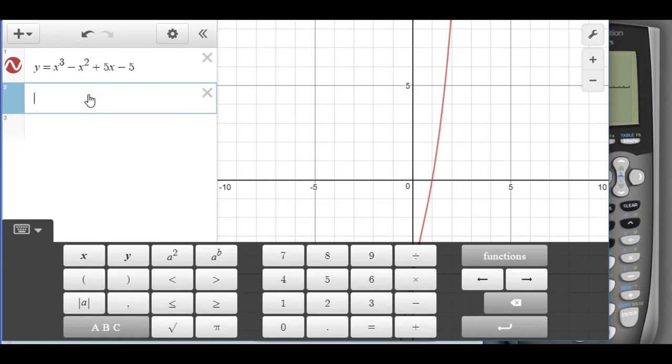Plus 5x minus 5 for our first equation. I'll click on the second box to type in the second equation. So y equals x, shift 6, 2 over, minus 6x plus 17.